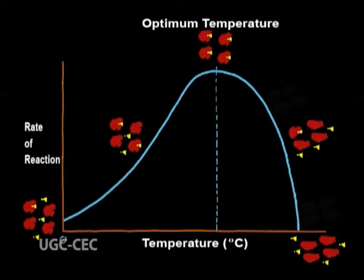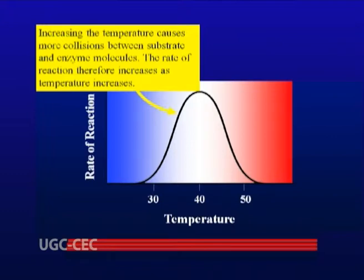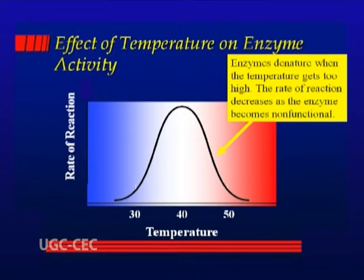When temperature is increased, the kinetic energy and hence the movement of molecules increases. This leads to the formation of more enzyme-substrate complex and thereby increases the enzyme activity. At optimum temperature, there is maximum enzyme activity because of maximum collision frequency between the active enzyme and substrate. Above the optimum temperature, the enzyme activity decreases because enzymes, being proteins, get denatured at higher temperatures.